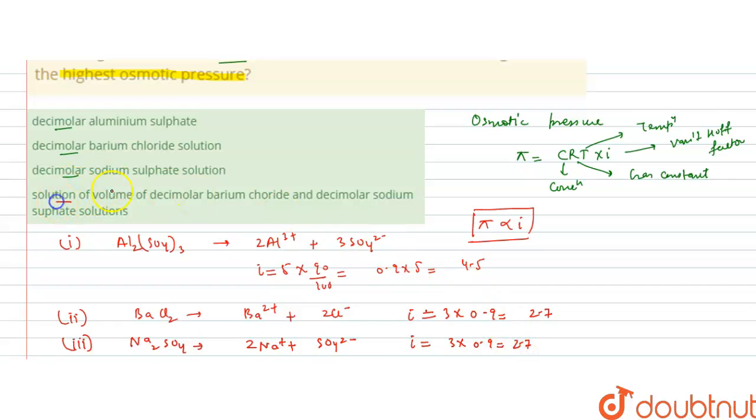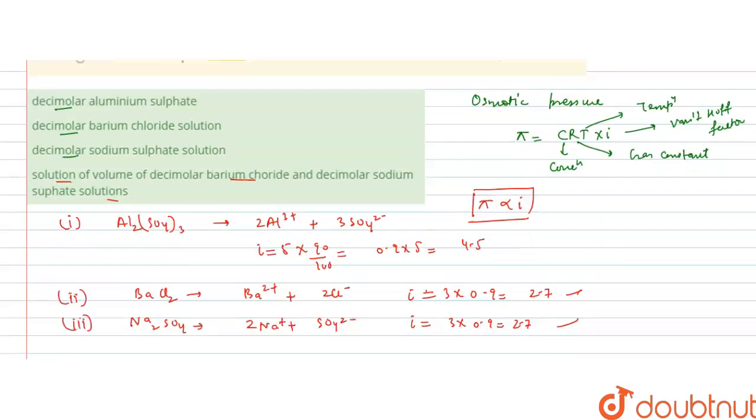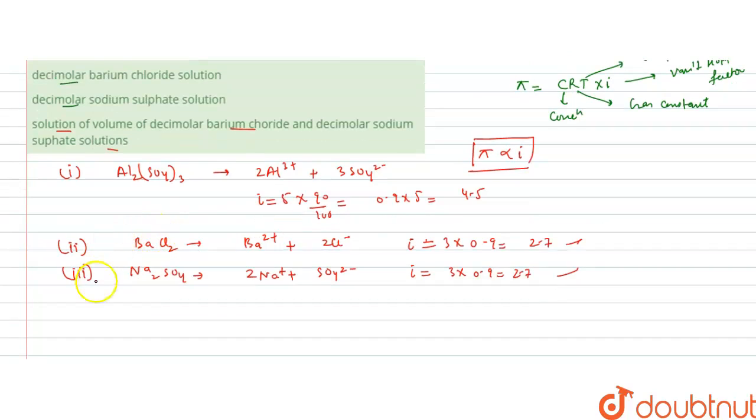The last option is a solution of equal volumes of decimolar barium chloride and decimolar sodium sulfate. If the volumes are the same, the I value in both cases will be 2.7 for barium chloride and 2.7 for Na₂SO₄.